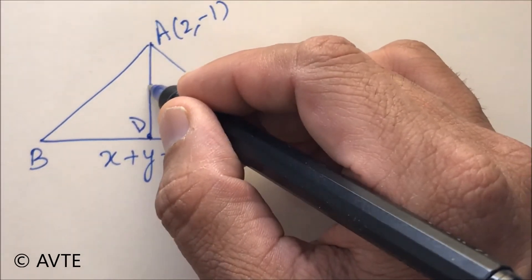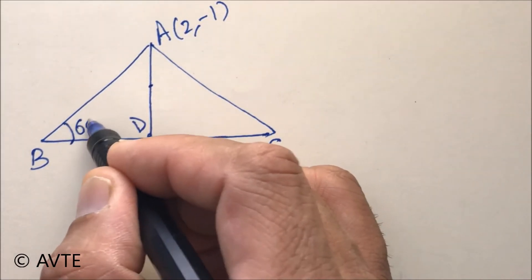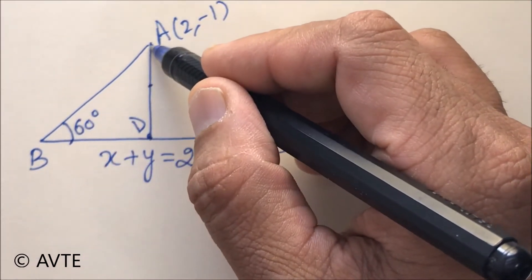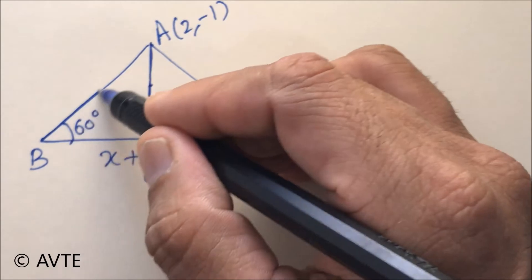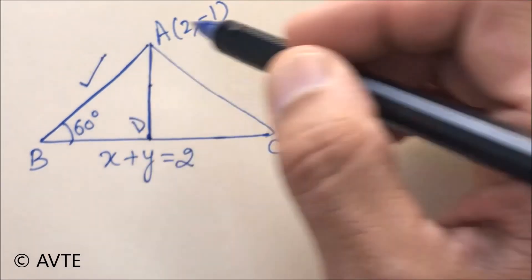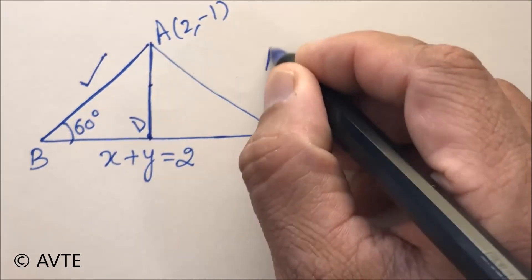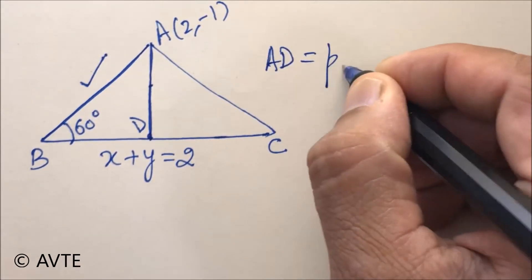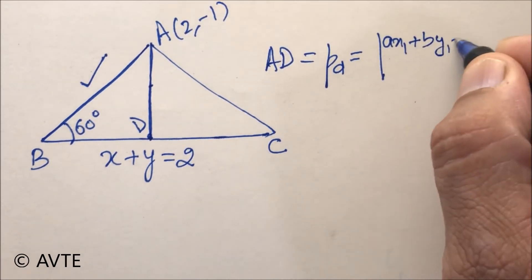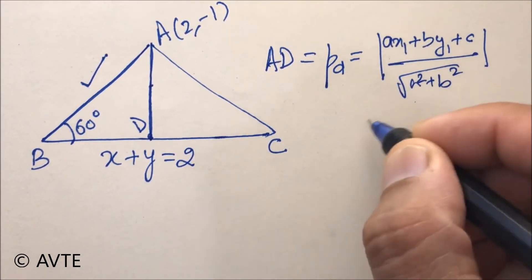Since it is an equilateral triangle, each angle is 60 degrees. Using sine 60 degrees — perpendicular upon hypotenuse — we can find the value of AB. Since all sides are equal in an equilateral triangle, we just need to find AD. AD is a perpendicular distance, so we use the formula: (ax₁ + by₁ + c) divided by the square root of (a² + b²).